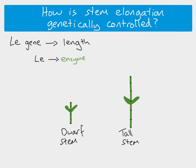That functional enzyme is responsible for taking an inactive form of gibberellin — the start of the pathway — and converting it into the active form of gibberellin. So you need this enzyme to produce active gibberellin, and to get the enzyme you need the dominant LE allele.